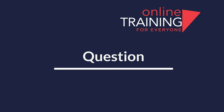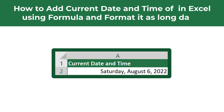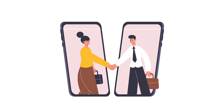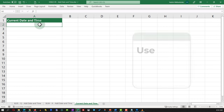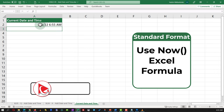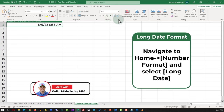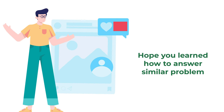Here's an interesting Microsoft Excel test question that tests your knowledge of Excel formulas. You need to show how to add the current date and time in Microsoft Excel using a formula and then format it as long date. The solution is very simple: type the =NOW() function. The NOW function returns the date and time in standard format. To format it as long date, navigate to the Home ribbon tab and in the number format section, select Long Date.